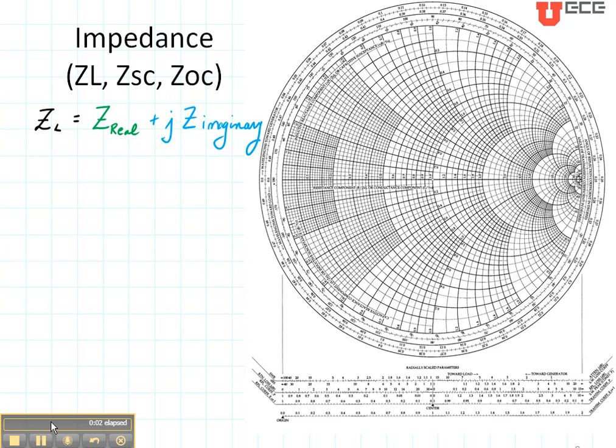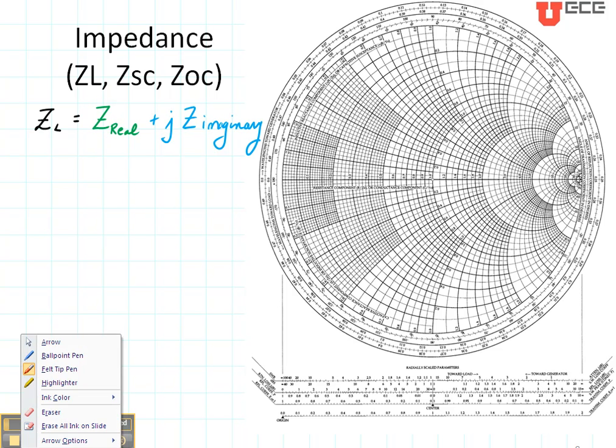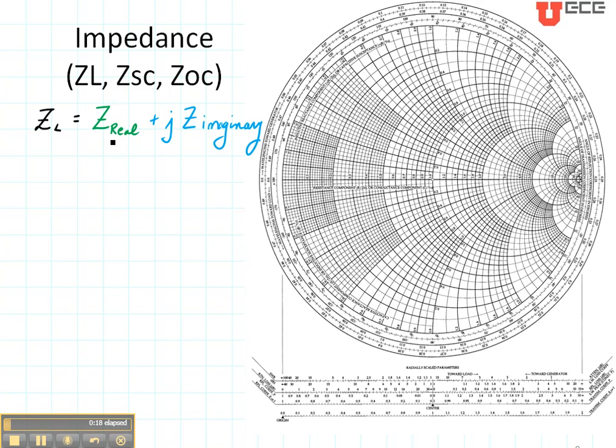The Smith chart can also be used for calculating or plotting impedance. Let's suppose we want to plot a load that has a real and an imaginary impedance. The first thing we do is normalize all of our values by Z naught.